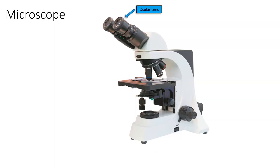Starting from the top, we have the ocular lens or ocular lenses. Some of the microscopes we have in class are a single eyepiece microscope. Some of them are binocular, meaning they have two eyepieces. We will use both — you need to be comfortable with both. Those are the ocular lenses; they typically have a magnification of ten times. All of the in-class microscopes will have a ten times ocular lens.